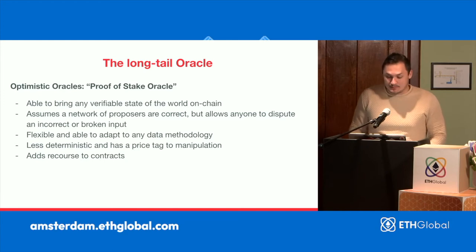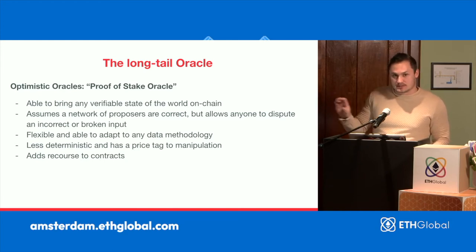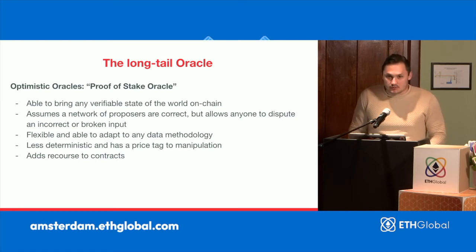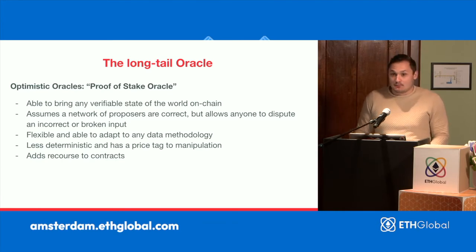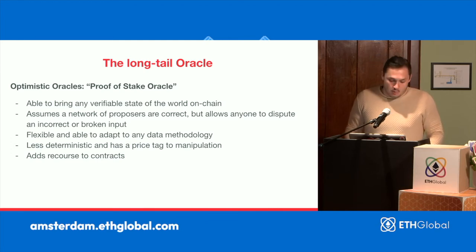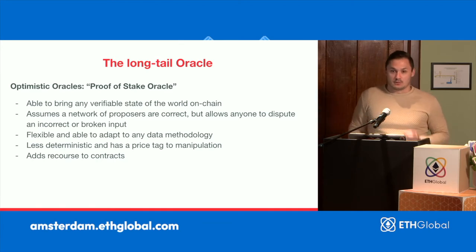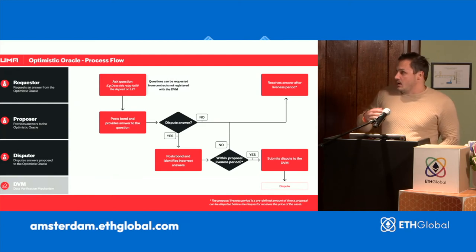The optimistic oracle is a lot more flexible and can adapt. We'll go through how a request comes on chain in a way that everyone can trust. It also adds some sort of recourse. With most price feeds today, you take the price or you leave it, and if there's any tampering, data breach, manipulation, or gas issues, contracts that rely on these will execute regardless. Optimistic-style oracles allow people to dispute an outcome that doesn't fit the intention of the contract or product being built.